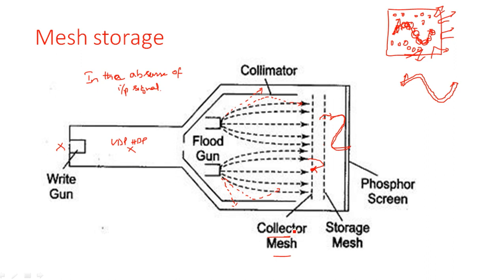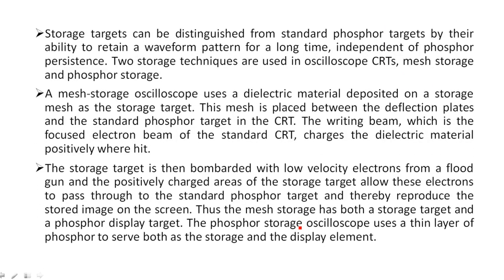So that is how the operation of mesh storage works. Phosphor storage is nothing but what is used in the conventional method. This is how the storage oscilloscope operates with the help of storage mesh. Some additional description has been added in the next slide which you can go through. Thank you.